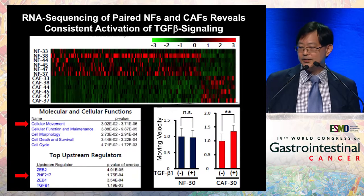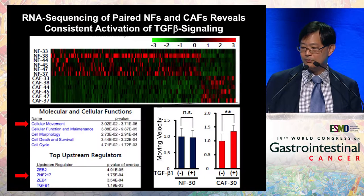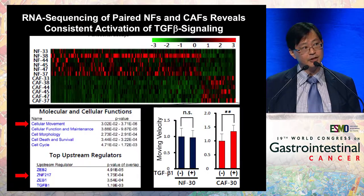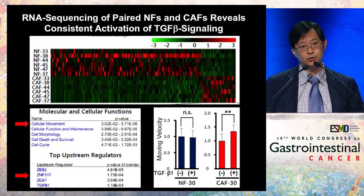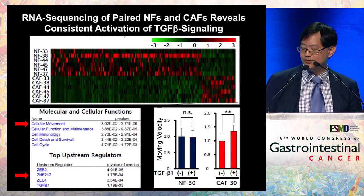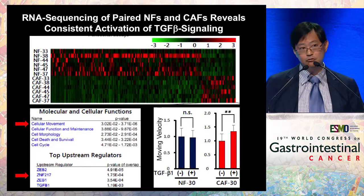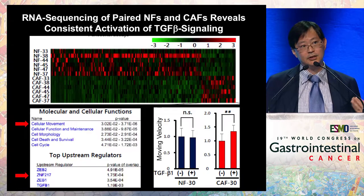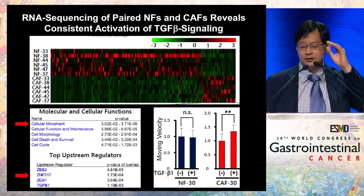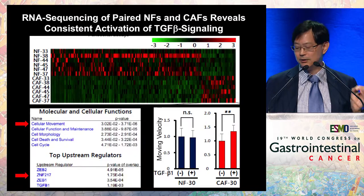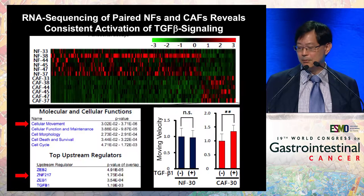To understand the pathways activated in the CAFs that give rise to this pro-metastatic program, we've done RNA sequencing on normal fibroblasts and CAFs. When we do a pathway analysis, the top pathway that comes up is related to TGF-beta signaling and its regulators — which is well known in the field. If you add TGF-beta to the CAFs, you can stimulate their movement. However, when we look at the levels of TGF-beta signaling in normal fibroblasts versus CAFs, we don't see a difference, suggesting the heightened response in the CAFs is not due to secretion of the ligand itself, but must be something downstream.